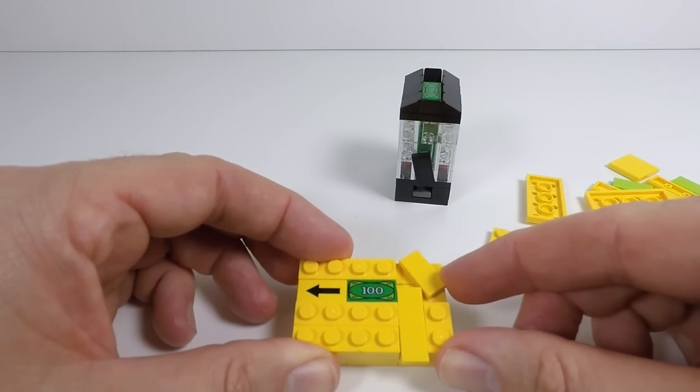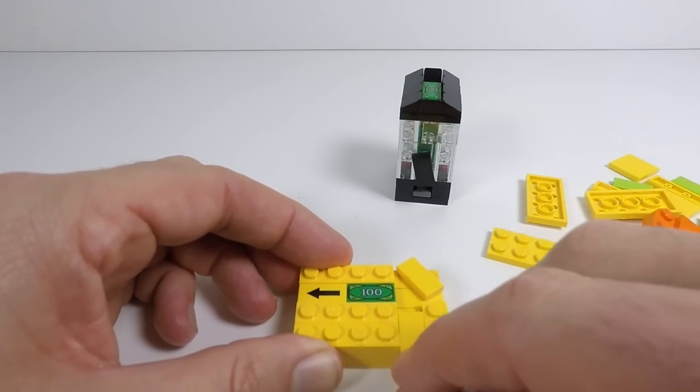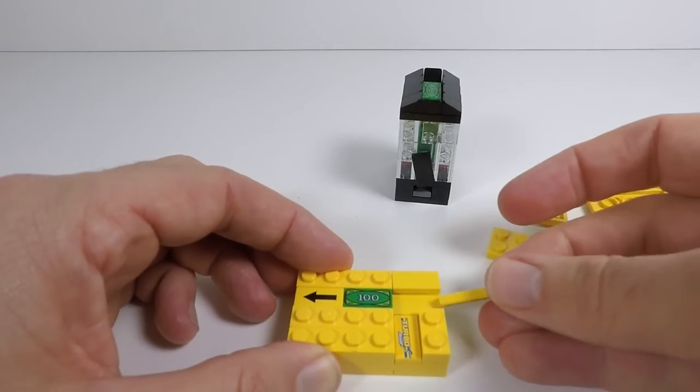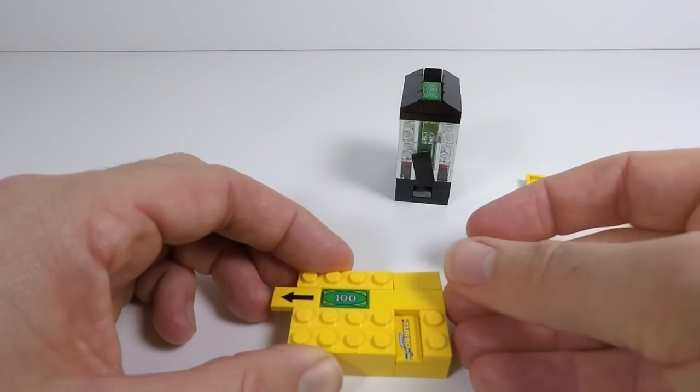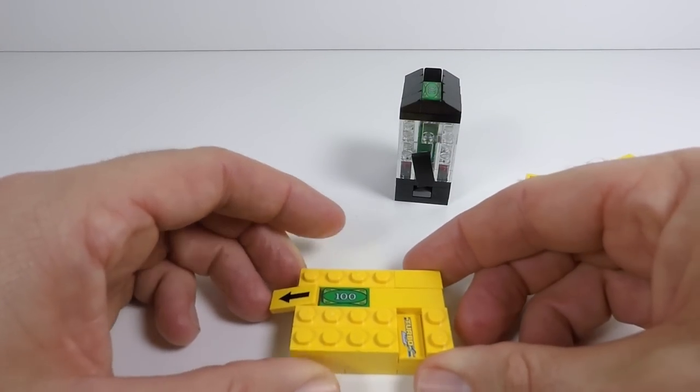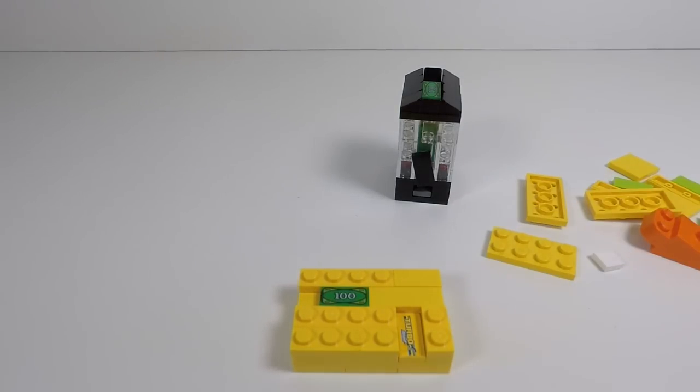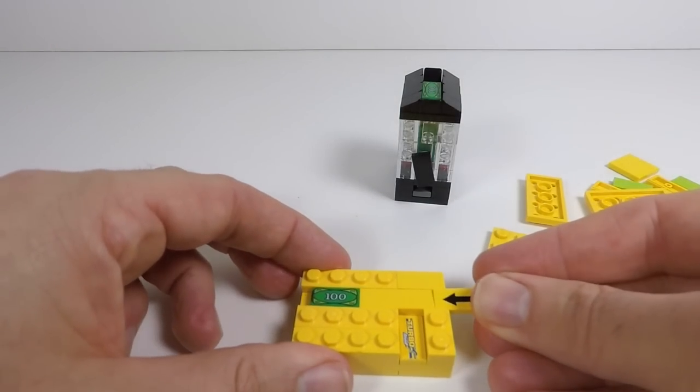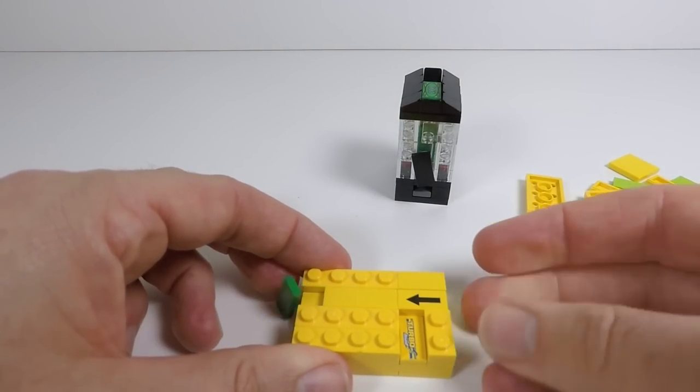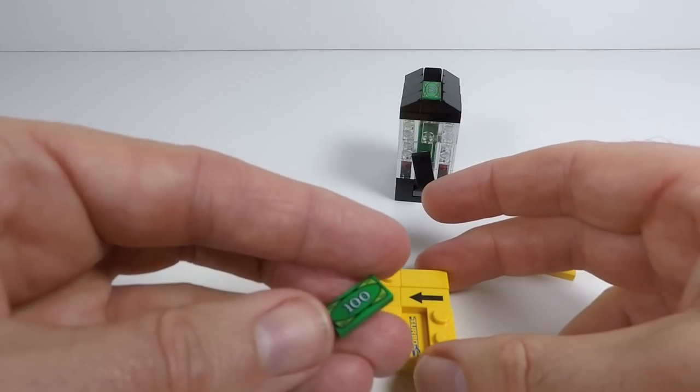And it actually pushes this little tile, and when we turn it back we can now slide this down here. But because it's a one by three, it's not quite enough to get the money out, and that's where this little arrow comes in. So we push that back in and we see that the money drops out.